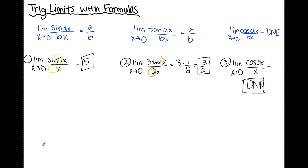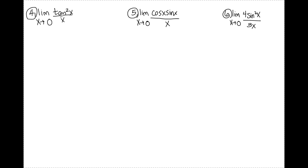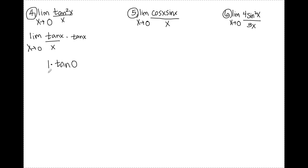Let's look at a couple that are a little bit more tricky. Number four: the limit as x approaches 0 of tan squared x over x. This doesn't look exactly like the formula in the form tan ax over bx, so I'm going to rewrite it to match that form. I can split up the numerator as tan x times tan x and pair the denominator with one of those, giving tan x over x times tan x. Now I can evaluate each limit separately. For tan x over x, that's a over b, so 1 over 1 equals 1, times tan of 0. Since tan of 0 is 0, and 1 times 0 is 0, that's my limit for number four.